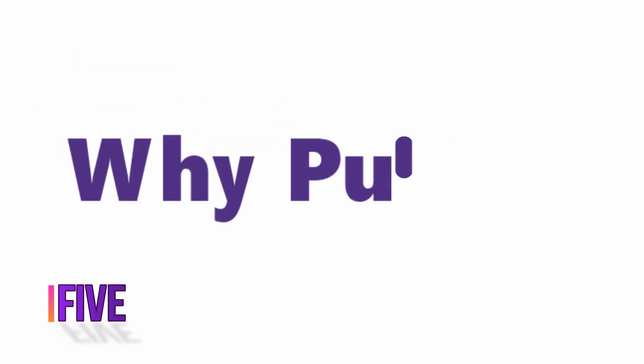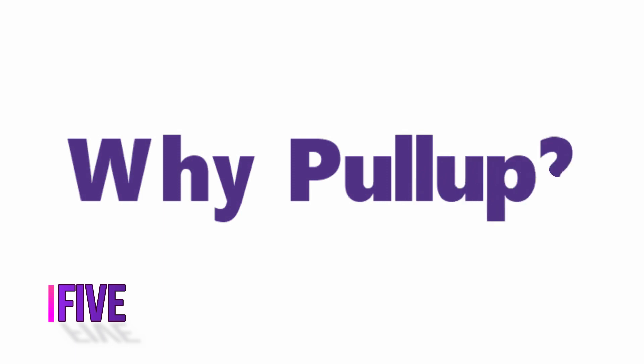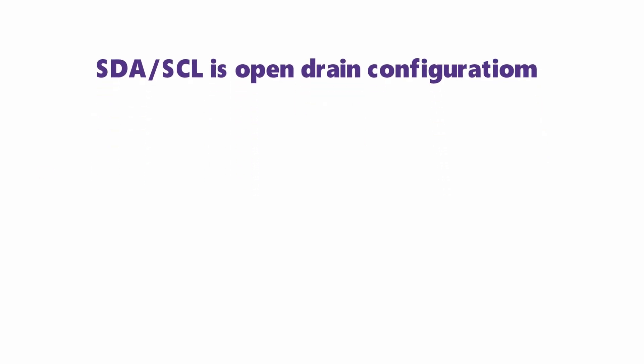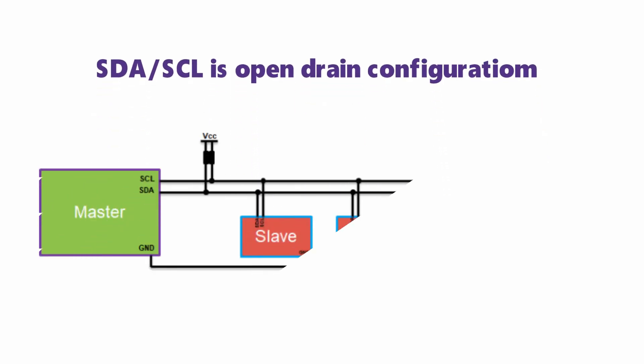The fifth secret is why pull-up resistors are needed on SDA and SCL lines. I2C lines are by default open-drain configurations by design, so they require an external pull-up resistor. This keeps the lines high by default, and they can be pulled low to initiate and perform data transfers.